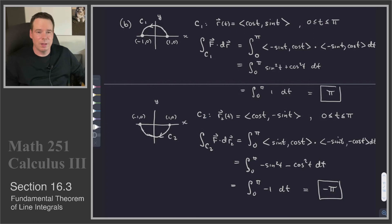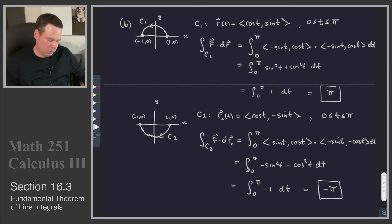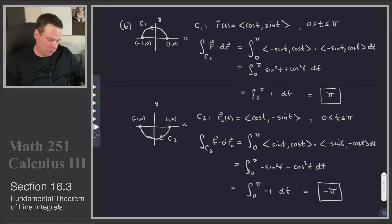So the line integrals of this vector field are not path independent — they depend on the path we take. My first path went from (1,0) to (-1,0) and gave π. My second path went from the same initial point to the same terminal point and gave -π. So this integral is not path independent, which means our vector field cannot be conservative.